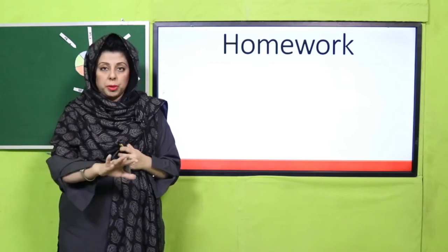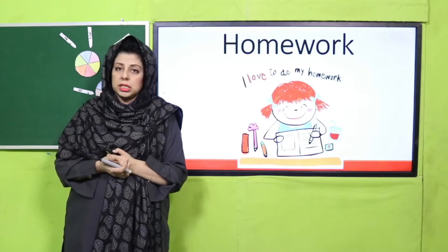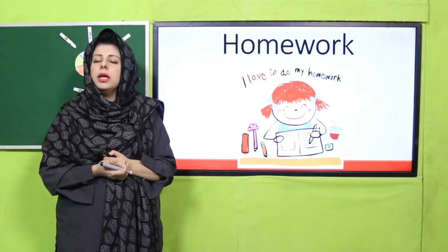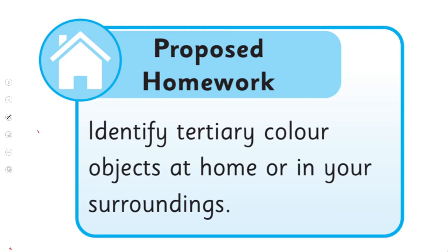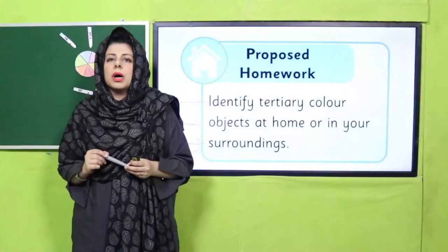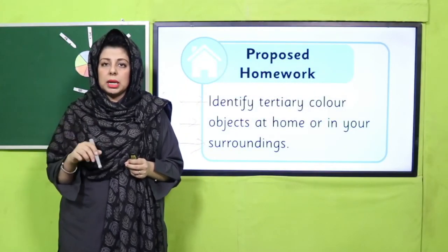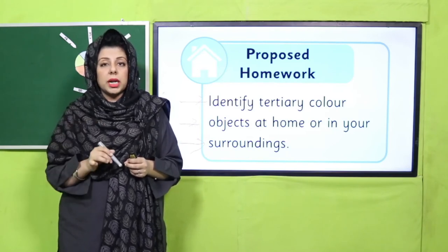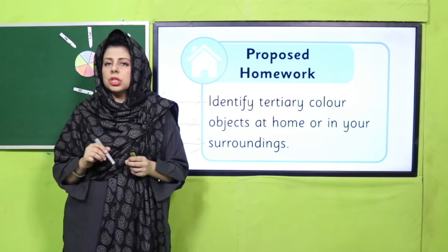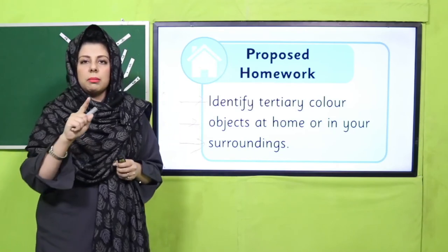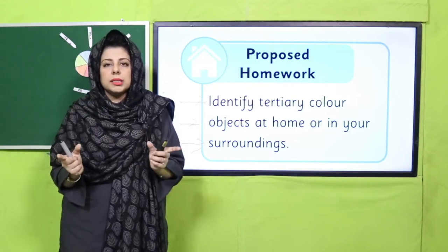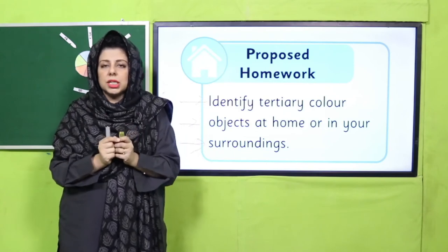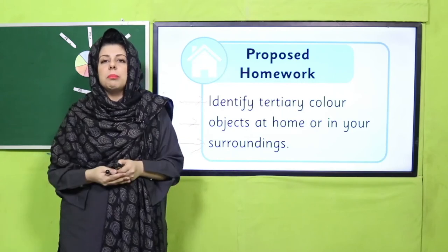Copy pe kaam karne ke baad, book pe task karne ke baad, ab aapka time hua hai homework samajhne ka. Toh homework ke liye jaldi se ready ho jayen - kyunke aaj aap ne itni pyari coloring ki hai and I am very happy to see very colorful books. Aapka homework kya hai? Book ke page pe mention hai - you can see it on the screen: identify tertiary color objects at home or in your surroundings. Aaj aap ka homework yeh hai - school se ghar jaate hue raste mein agar aapko koi tertiary color ki cheez lage toh aap ne woh identify karni hai. Aur specially ghar ja kar kuch na kuch tertiary color ki objects ko identify karna, dhoondhna, aur mama ko bhi batana ke aaj hum ne tertiary colors sikhe hain.